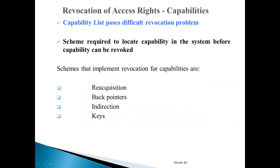These capabilities are maintained by the operating system. Capabilities are not viewable by programs, processes, or users, and they cannot be modified by them — they are separately maintained by the OS. Since it is maintained by the OS, every object's association with a domain is maintained as a capability. Revocation of access rights in a capability-based list is a tough task because the capabilities are scattered throughout the system.